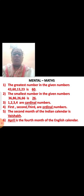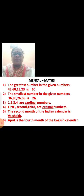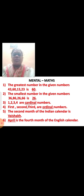Okay kids, now y'all are going to repeat after teacher. The greatest number in the given numbers 43, 60, 13, 23 is 60. The smallest number in the given numbers 36, 86, 26, 66 is 26.